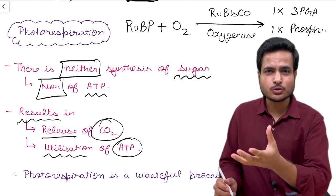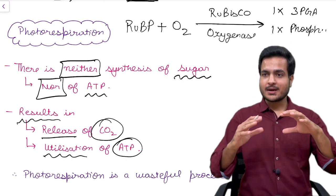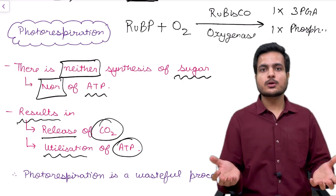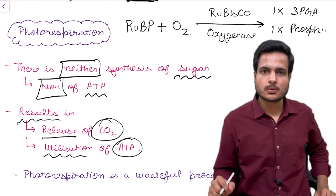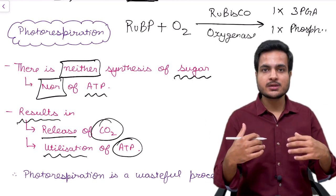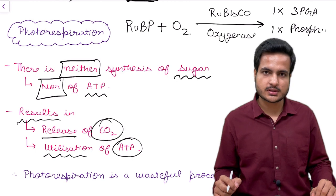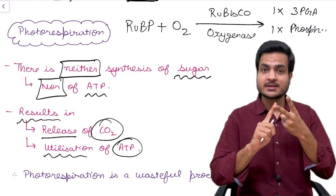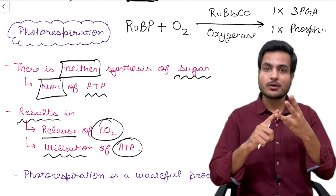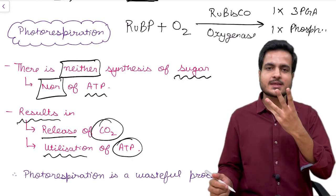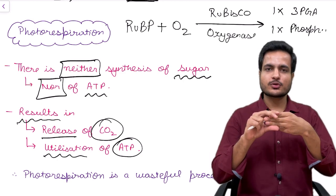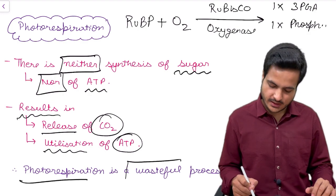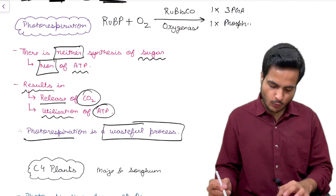How can you call a process useful when the plant is releasing carbon dioxide instead of oxygen, is not able to synthesize glucose, and is also using the energy made during photosynthesis? Because of these three reasons — glucose not formed, energy consumed, and carbon dioxide released instead of oxygen — photorespiration is called a wasteful process.